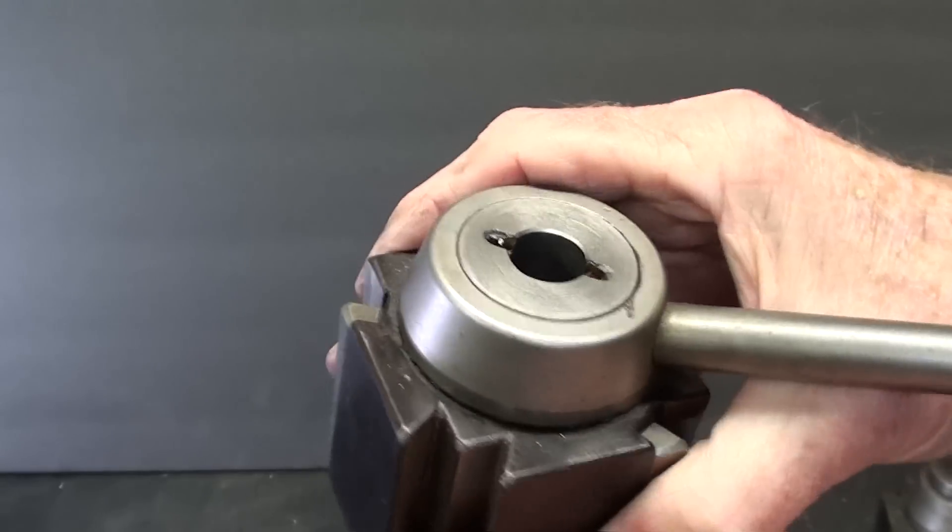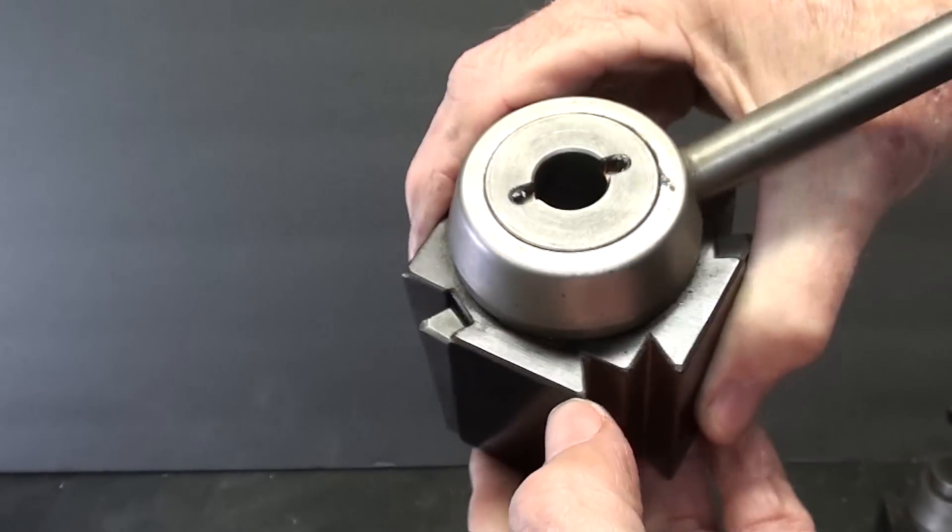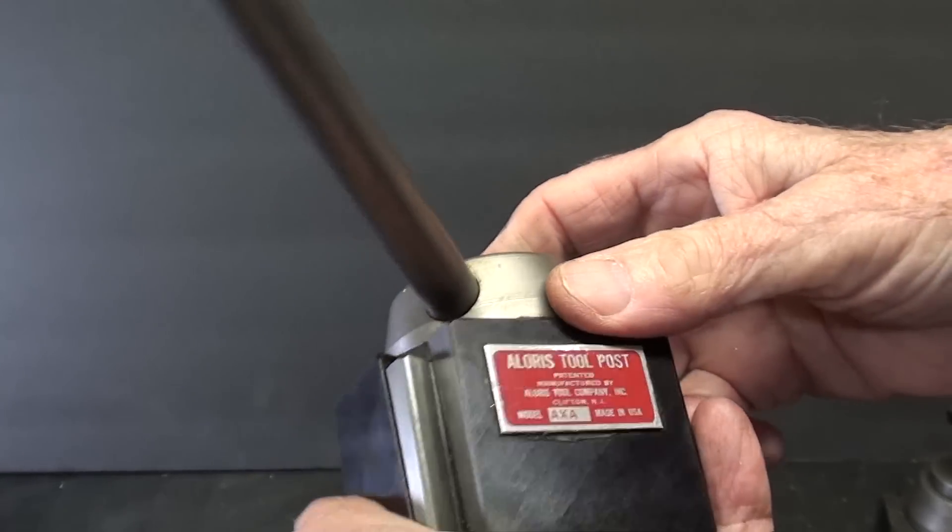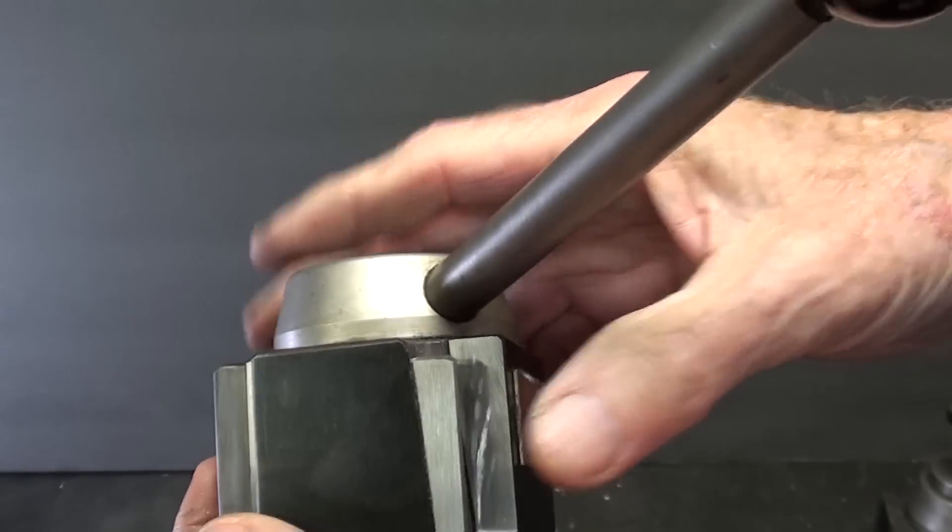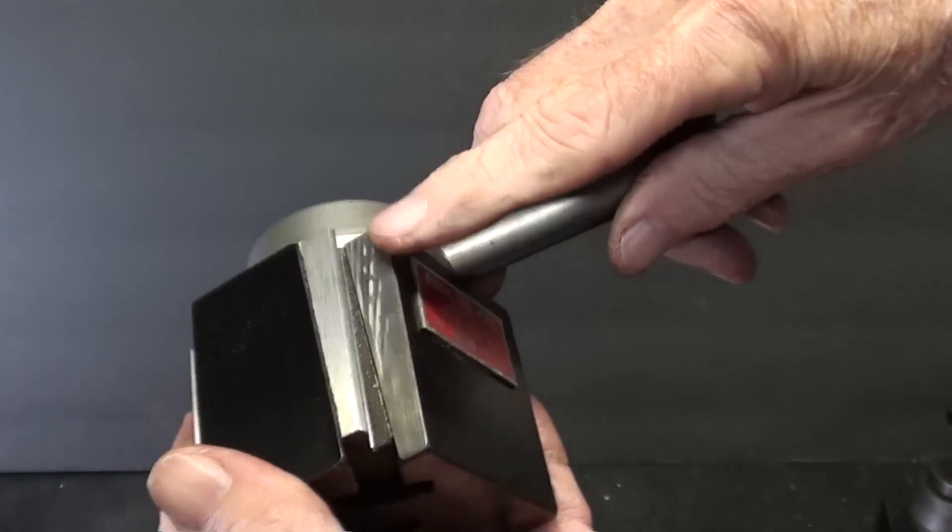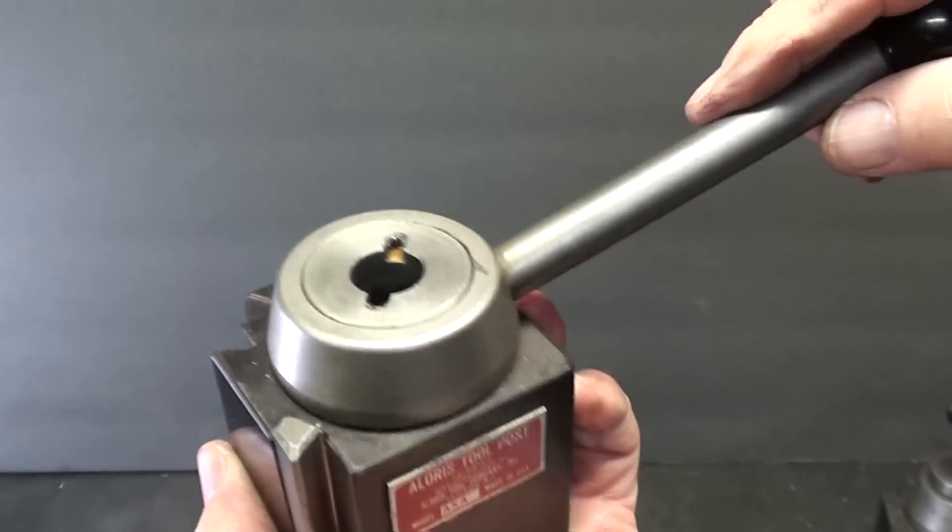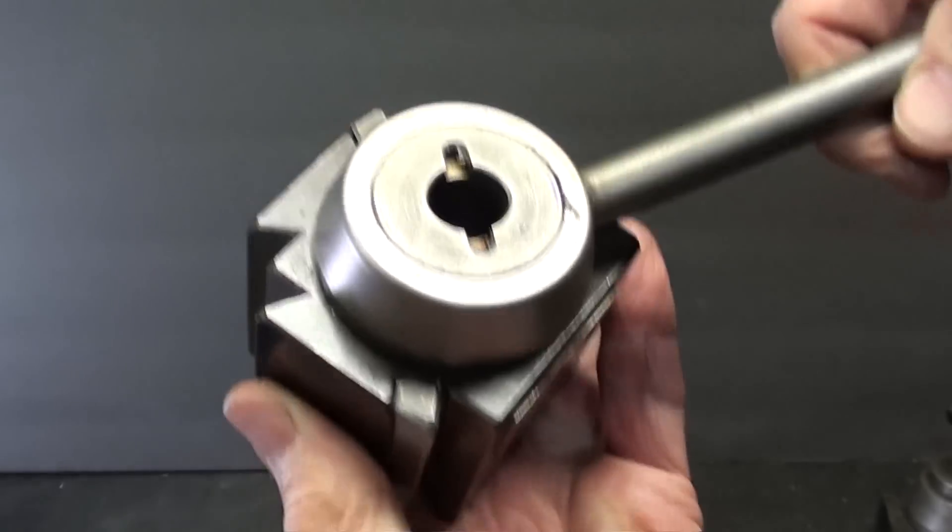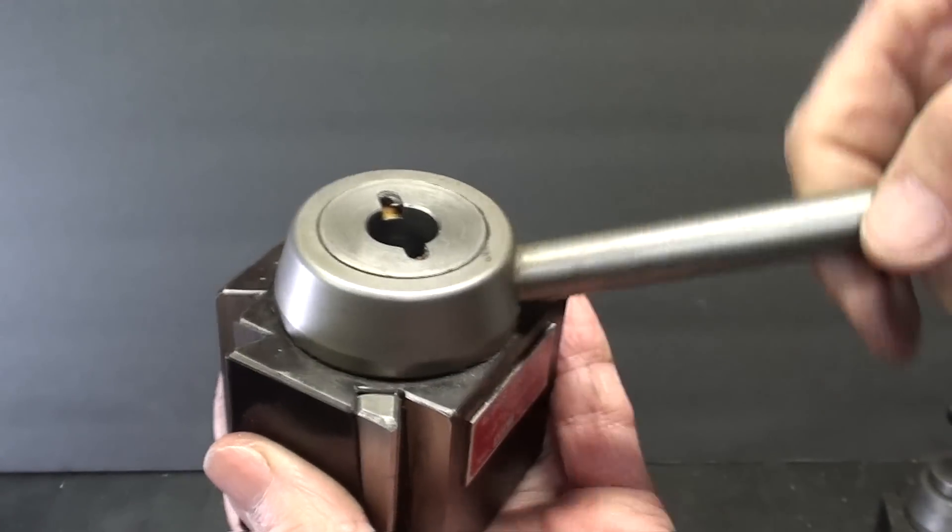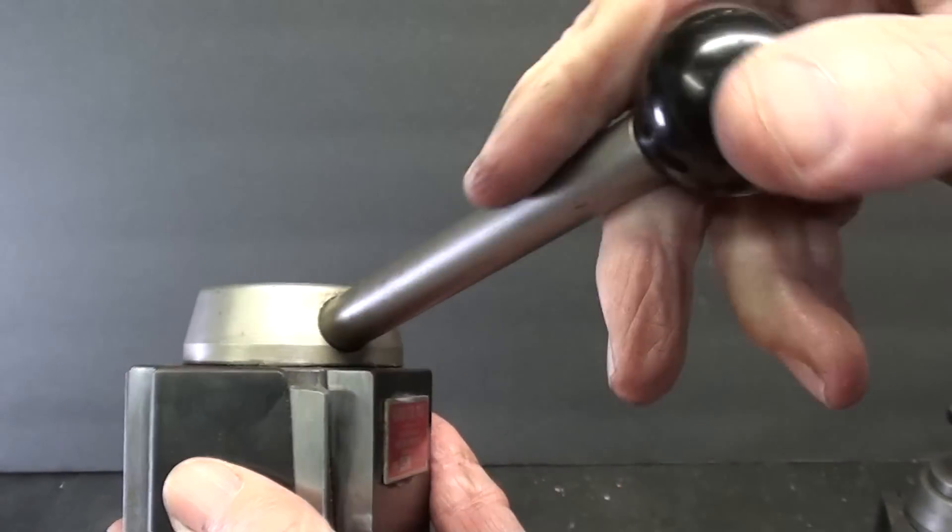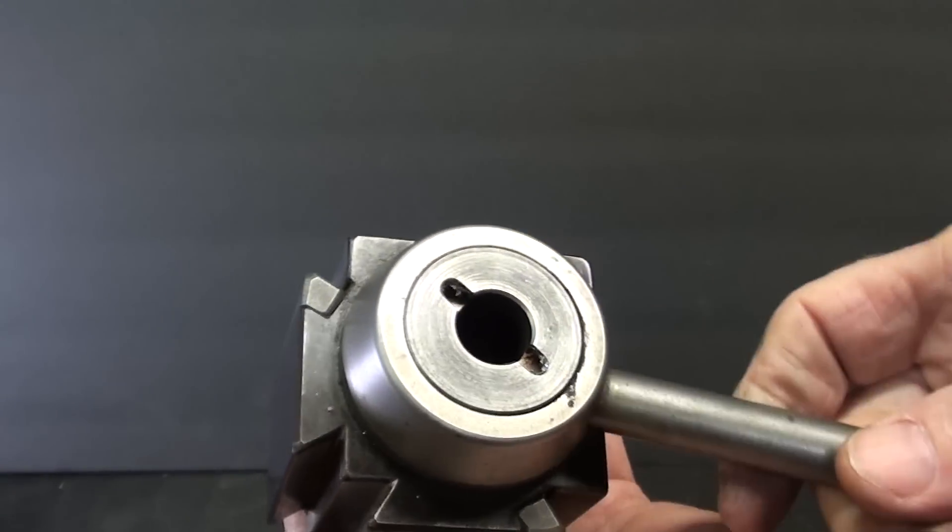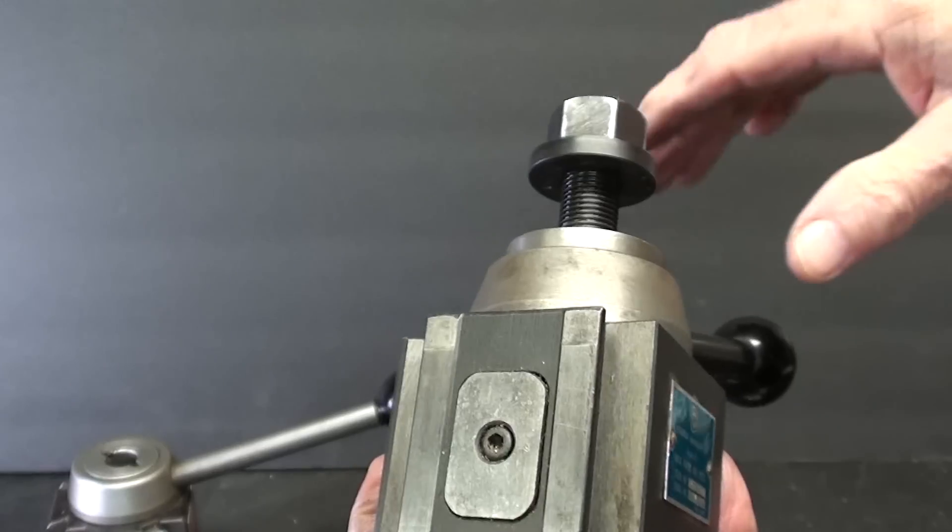Some people call these tool posts dovetail type, because there are two dovetails here, and on the better models, like this AXA here, as you turn the handle, there is a wedge here, and that's what tightens and loosens your tool holder within the tool post. And both sides are operating at the same time.